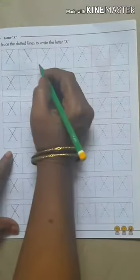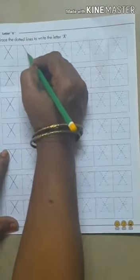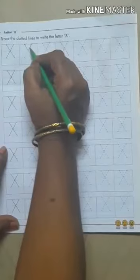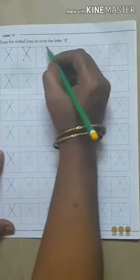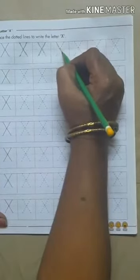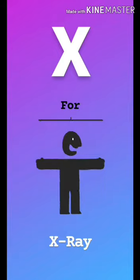Today I will teach you X. We will draw a right slanting line, then another line — a left side slanting line. X. Right slanting line, left slanting line. Right slanting line, left slanting line. It makes X.